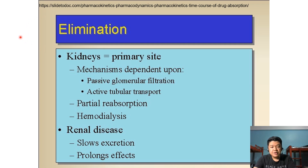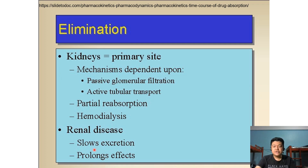The last step is elimination, or excretion. The primary site for elimination of the drug in the body is the kidneys. The mechanisms by which the kidney excretes drugs include passive glomerular filtration, active tubular transport, and partial reabsorption. The kidney is also important for hemodialysis — the process by which the kidney filters waste and water from the body. The presence of renal disease, similar to liver disease, will slow down drug excretion and can prolong the effect of the drug.